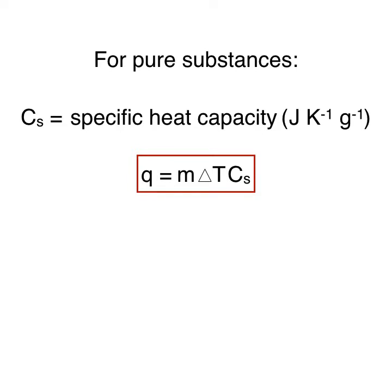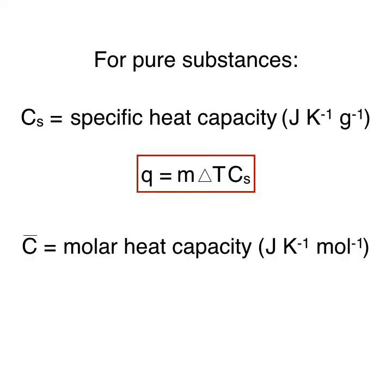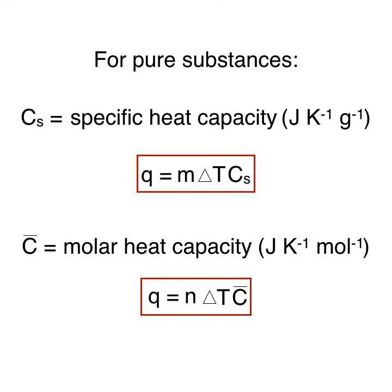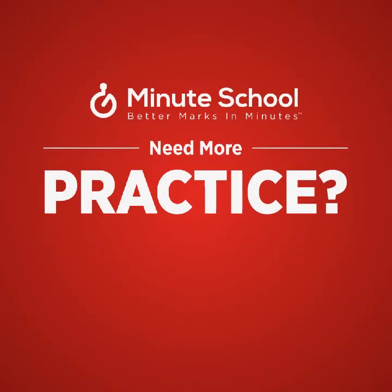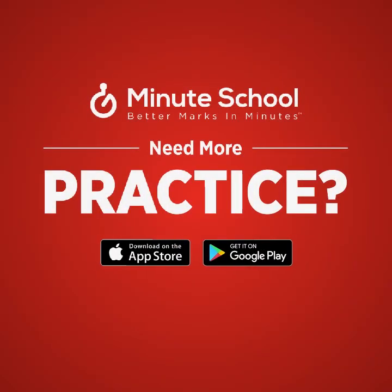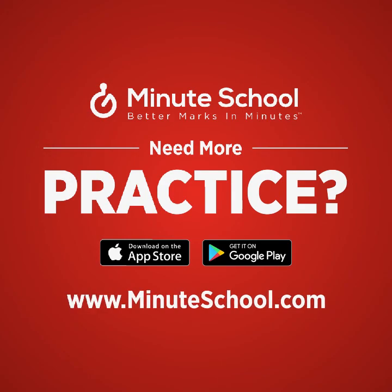When the heat capacity is given in joules per Kelvin mole, this is known as the molar heat capacity. This tells us the amount of heat required to increase 1 mole of a substance by 1 Kelvin. Thus, to calculate the total amount of heat transferred, we can multiply the number of moles of the substance by the temperature change and the molar heat capacity.